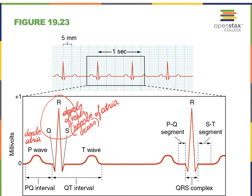The T wave represents the repolarization of the ventricles. So once again: the P wave is depolarization of the atria; QRS is depolarization of the ventricles; and within the QRS complex, completely covered up because it is so complex, is the repolarization of the atria; and then the T wave is the repolarization of the ventricles. An EKG is not illustrating when the atria versus the ventricles contract, but we can deduce from an EKG when the atria and the ventricles contract.